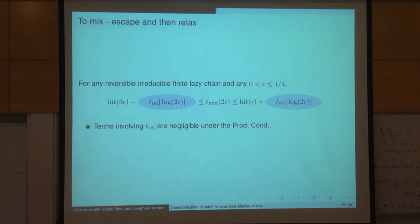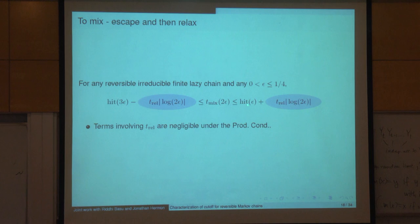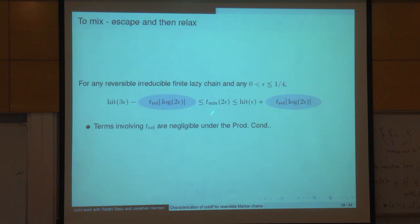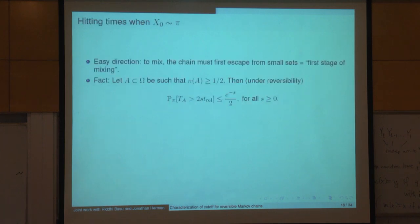We want to study cutoff for some chain. The first order of business is to check if the product condition holds — if it doesn't, there's no cutoff. If it does, the real work starts. Assuming the product condition holds, t_mix(ε) is equivalent up to a negligible error to hitting times. If you have concentration of hitting times, then t_mix doesn't depend much on ε.